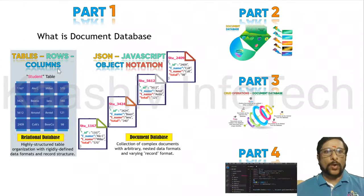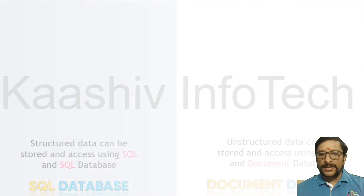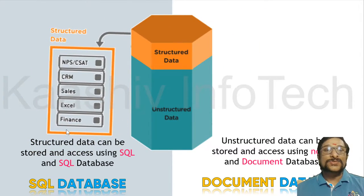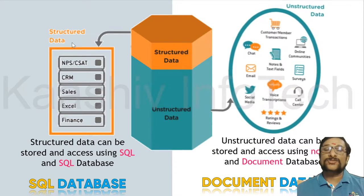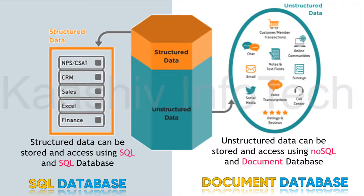Let us move on to the document database. What is a document database? Document databases — as I told you, SQL is nothing but structured data. Your Excel data, sales data, CRM, finance — such kind of data are called structured data, processed via the SQL database. Whereas there is unstructured data coming from chatting, email, Twitter, LinkedIn, or ratings and other stuff. This kind of unstructured data can be processed using NoSQL, and that database is called a document database.